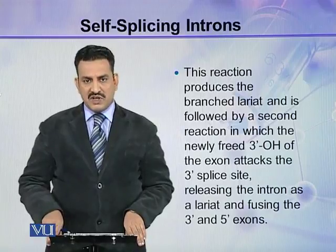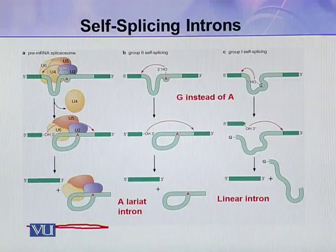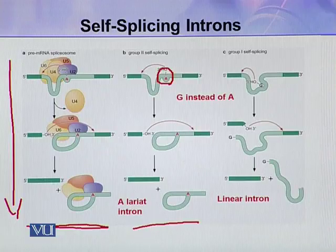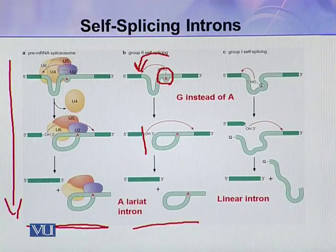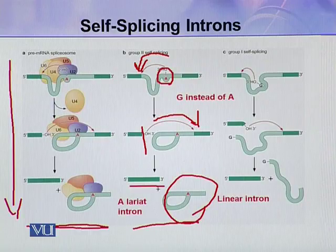These three steps are very similar to nuclear pre-mRNA splicing. In the comparison of all three types of splicing: for pre-mRNA spliceosome splicing you know how this takes place; for group 2 self-splicing, the 2' hydroxyl of A attacks the 5' splice site, the phosphodiester bond is broken, then this attacks the 3' splice site, the lariat is released and the two exons are joined.